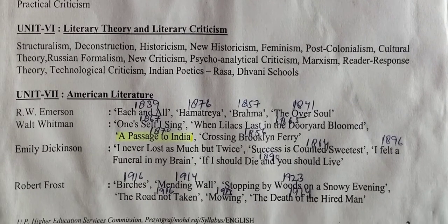Unit 6: Literary Theory and Literary Criticism. Terms included: Structuralism, Deconstruction, Historicism, New Historicism, Feminism, Post-Colonialism, Cultural Theory, Russian Formalism, New Criticism, Psychoanalytical Criticism, Marxism, Reader Response Theory, Technological Criticism, and Indian Poetics.